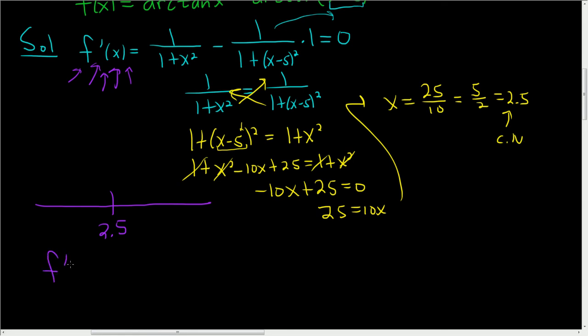So let's start by picking a nice number smaller than 2.5. How about 0? So f prime of 0. That's 1 over 1 plus 0 squared. Minus 1 over 1 plus... 0 minus 5 is minus 5, and that's being squared. So this is 1 right here. All of this is just 1. Minus... And then this is 1 over 1 plus... Negative 5 squared is 25. So this is 1 minus 1 over 26, which is positive.